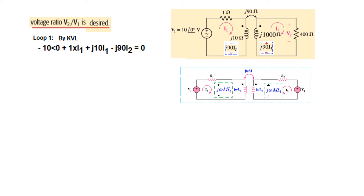Applying KVL to loop 1, starting from the left corner with a negative sign: −10∠0° + 1·I1 + j10·I1 − j90·I2 = 0. Collecting like terms gives the first mesh equation: (1 + j10)·I1 − j90·I2 = 10.